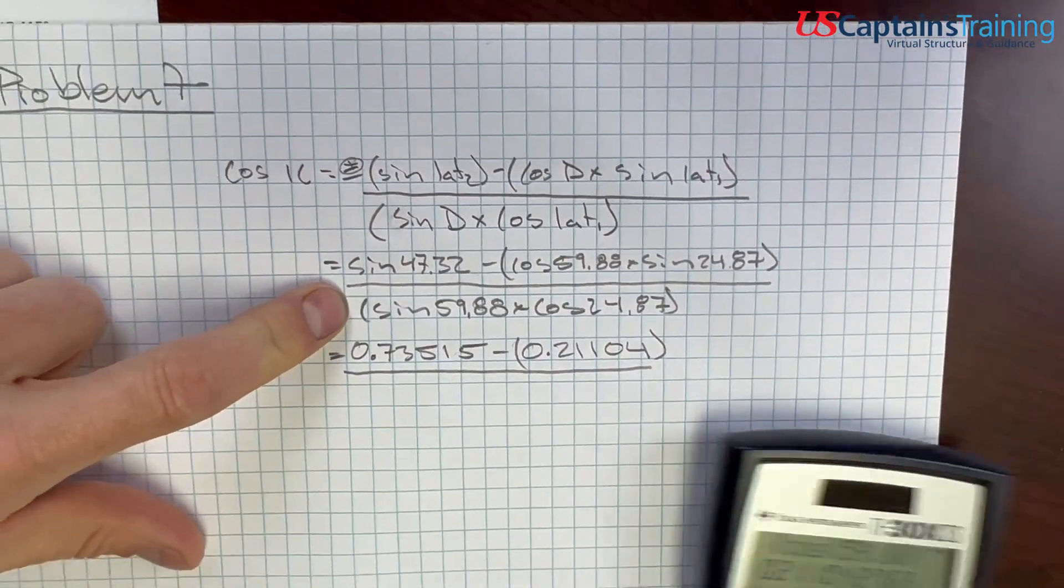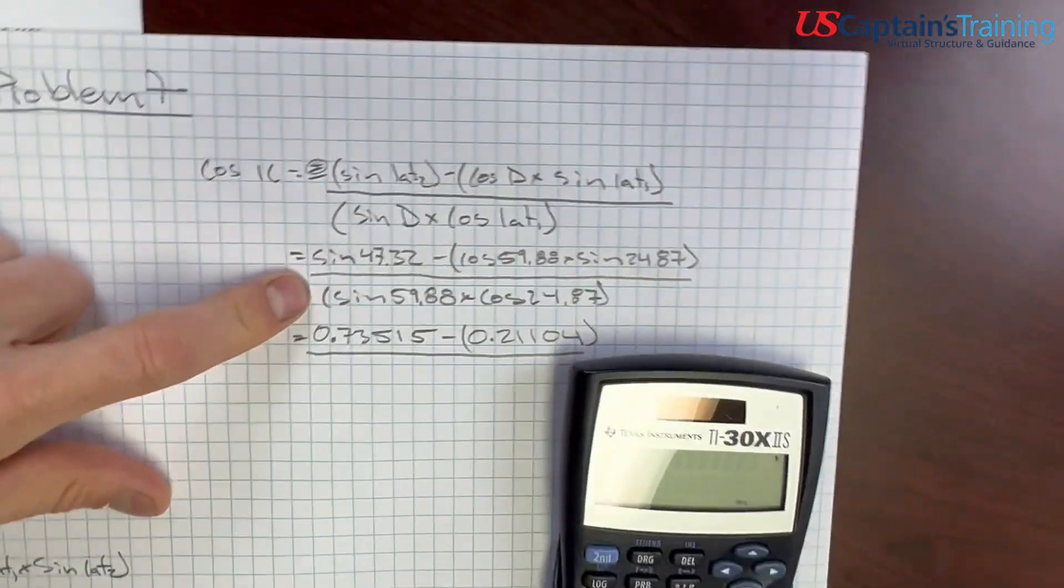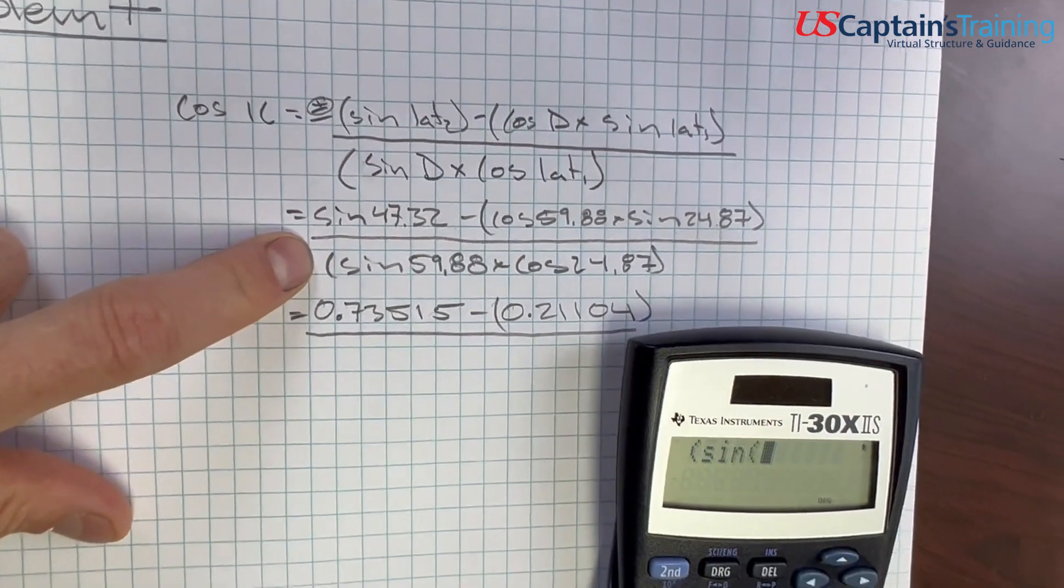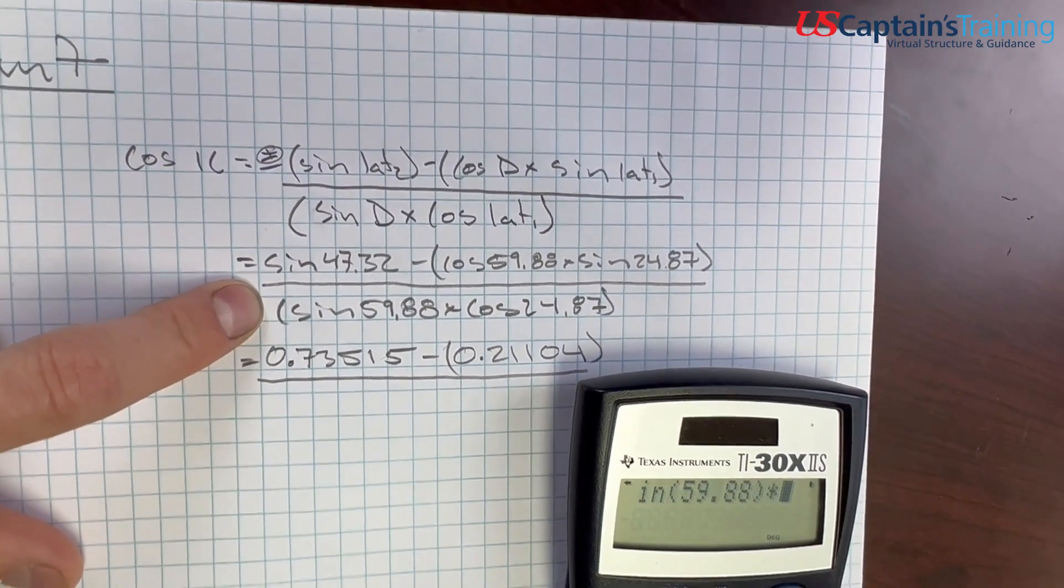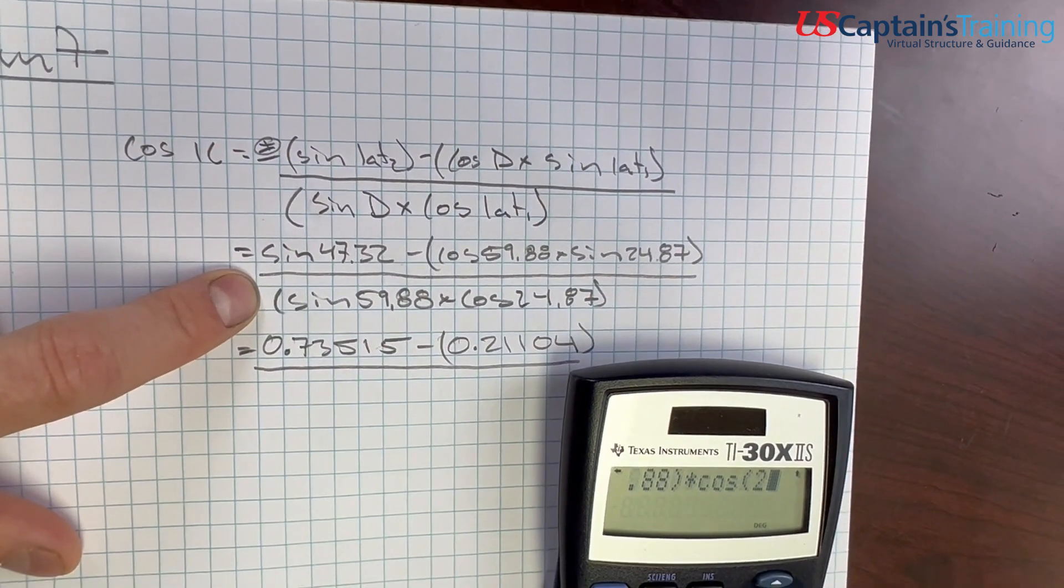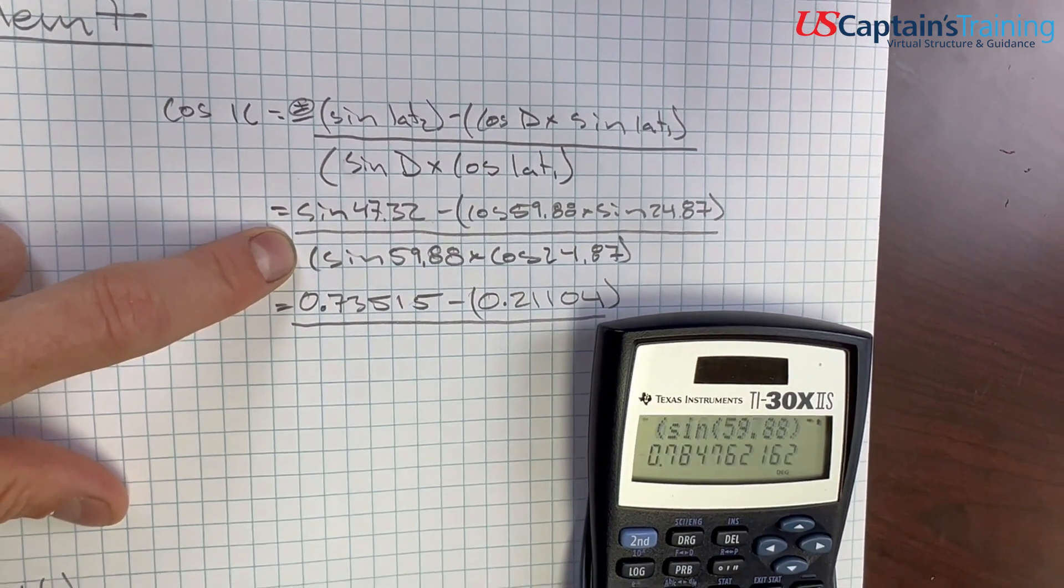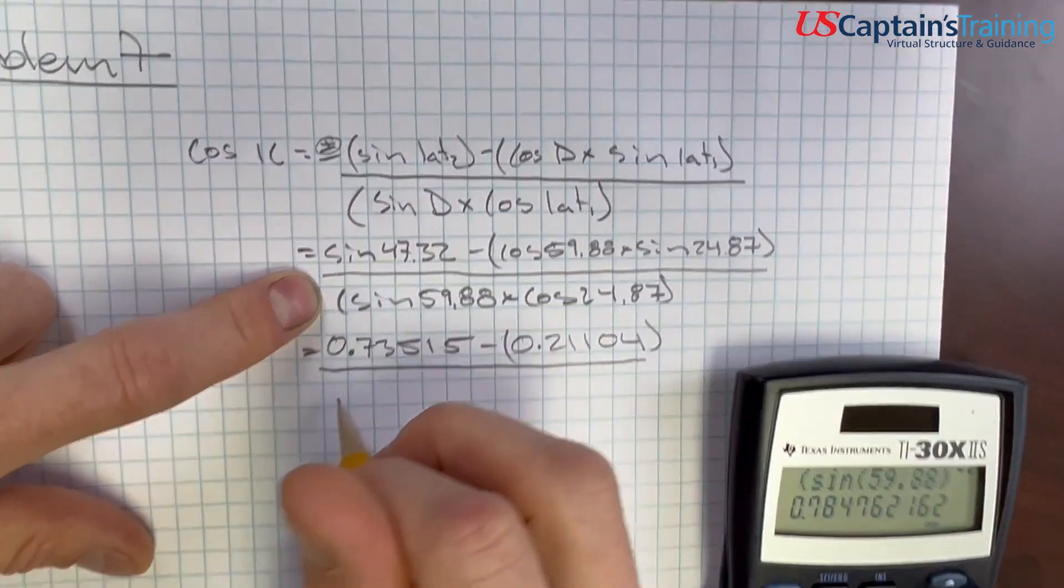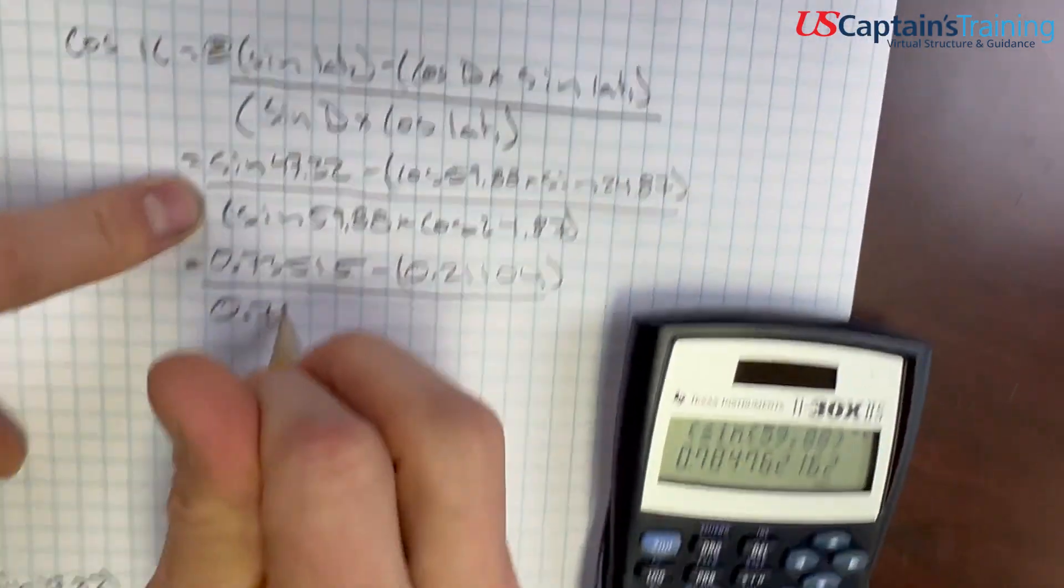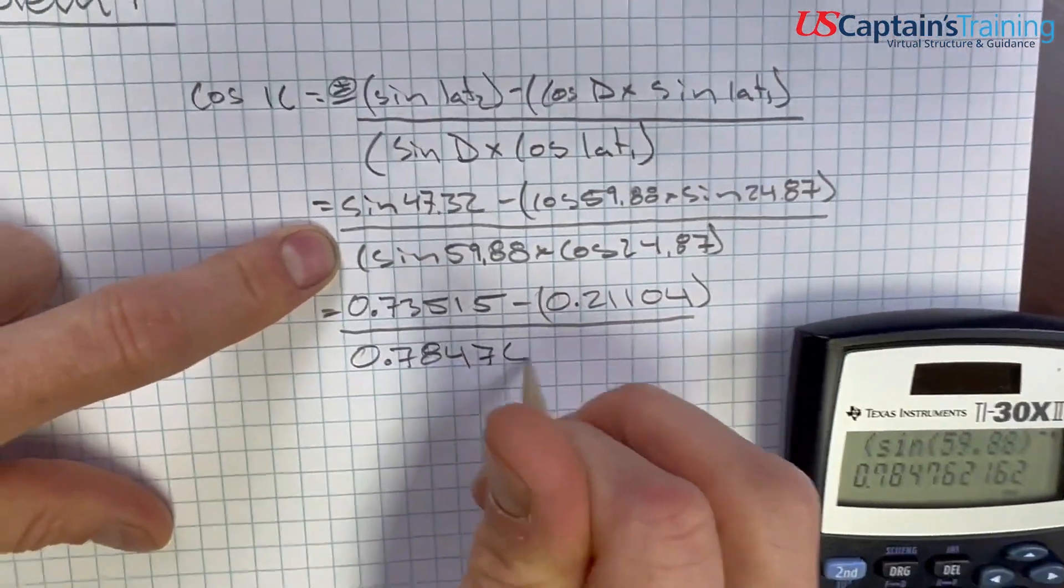Over - don't forget to put it over this - sine 59.88 times cosine 24.87 equals 0.78476.